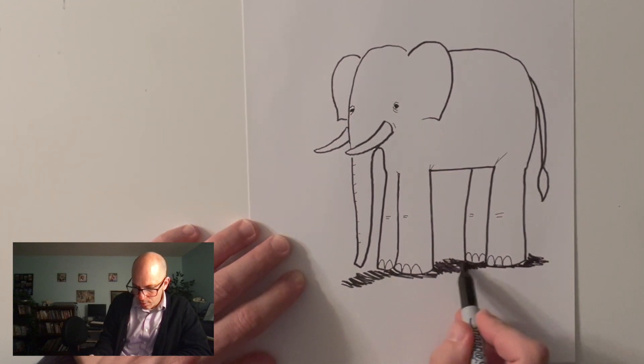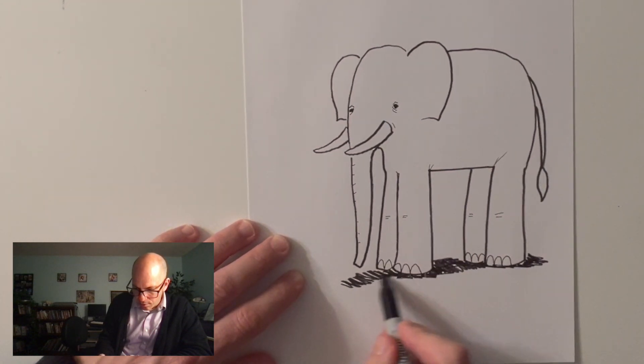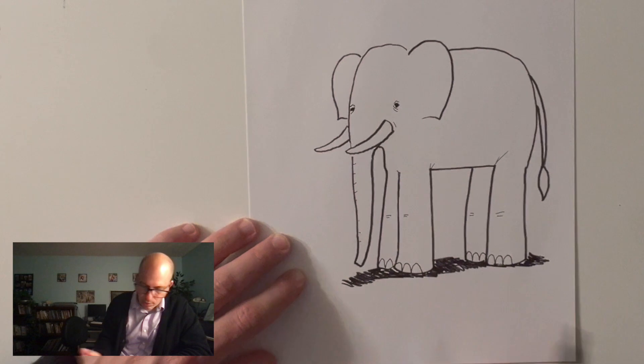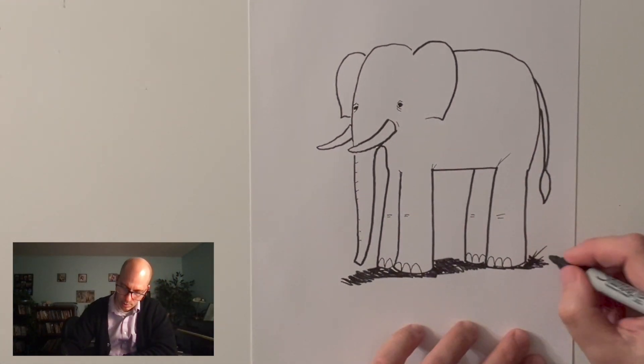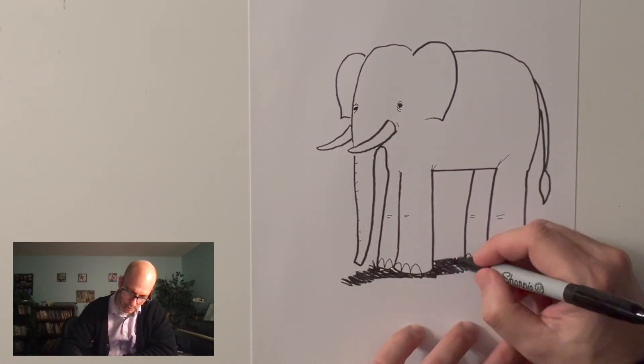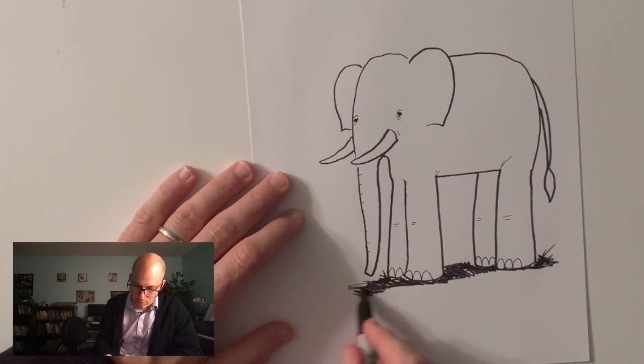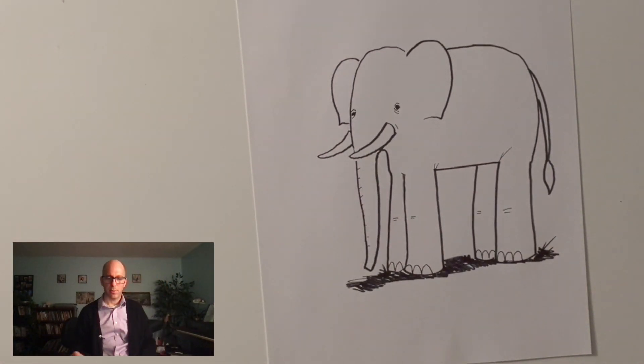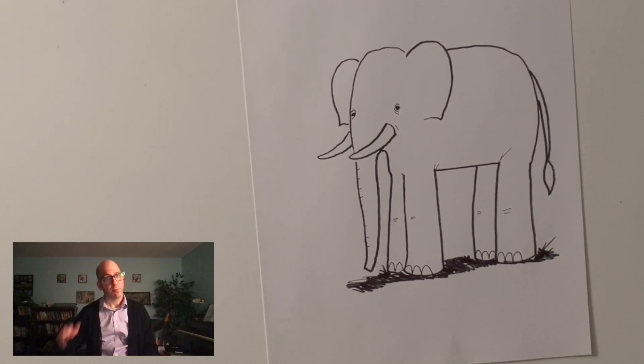And that will also help kind of keep the elephant grounded. A little bit of grass back here just to let you know he's on the grasslands eating some grass or something. That's pretty much it. That's it for an elephant. Thanks very much. See you later.